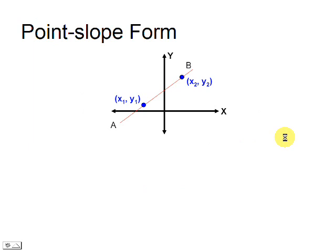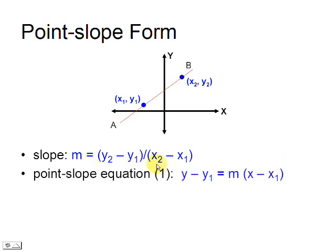This is the expression of the point-slope equation of a straight line. You need any point on the line and its slope. You can have more than one expression or equation because you can always consider more than one point.